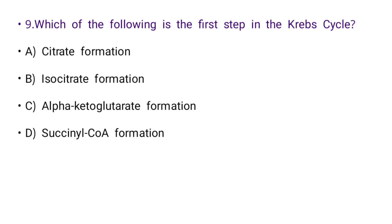Next: Which of the following is the first step in the Krebs cycle? Options: citrate formation, isocitrate formation, alpha-ketoglutarate formation, or succinyl coenzyme A formation. The right answer is A: citrate formation.